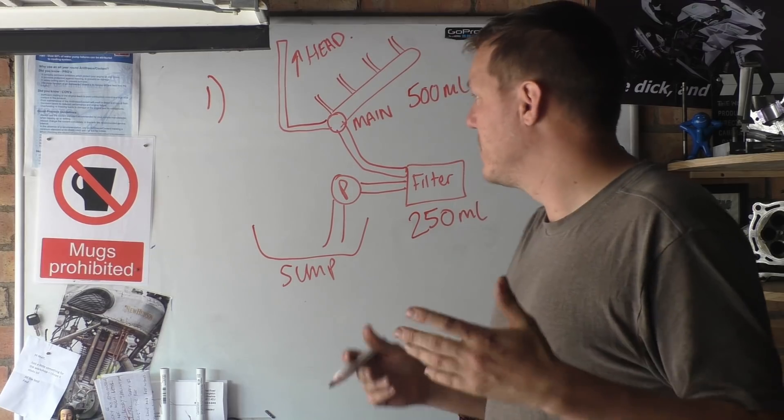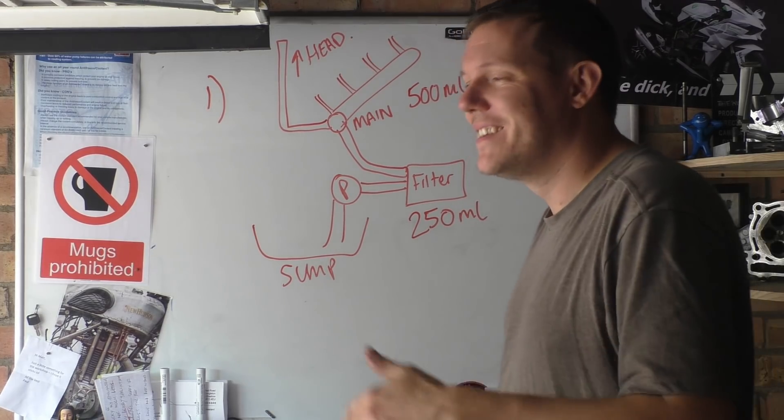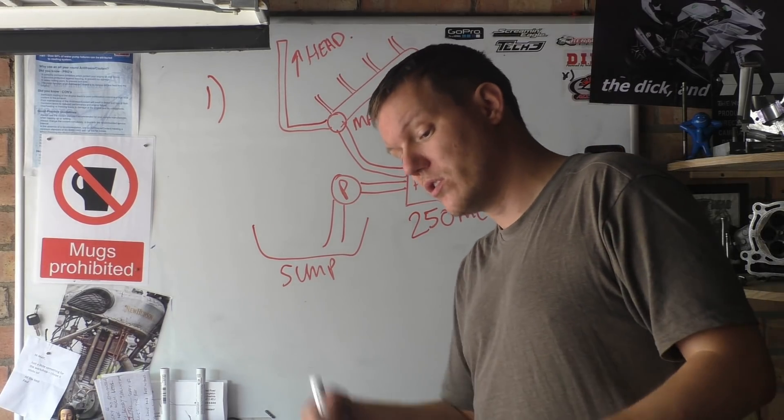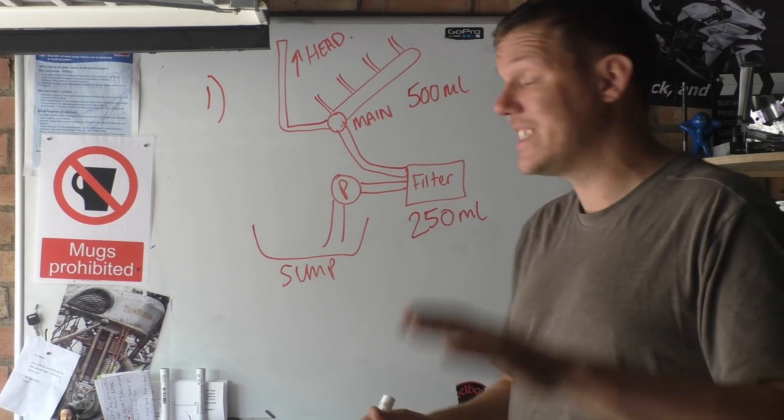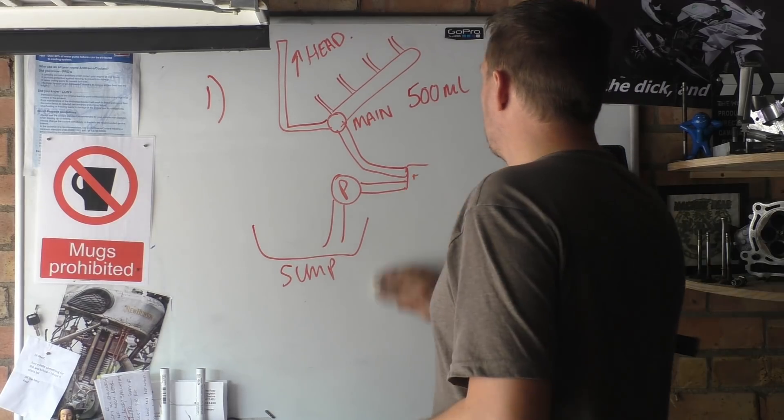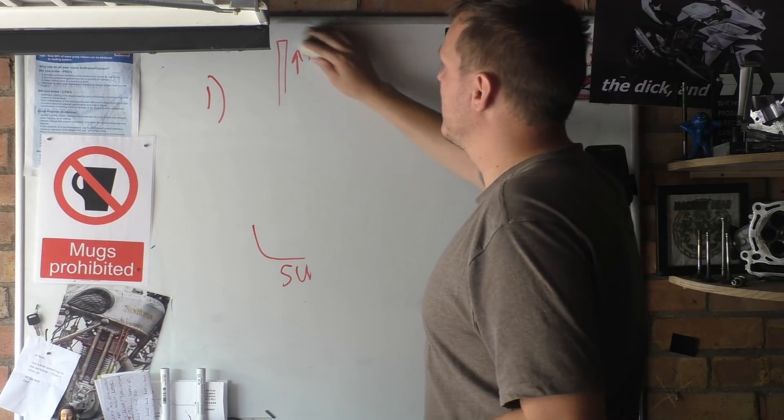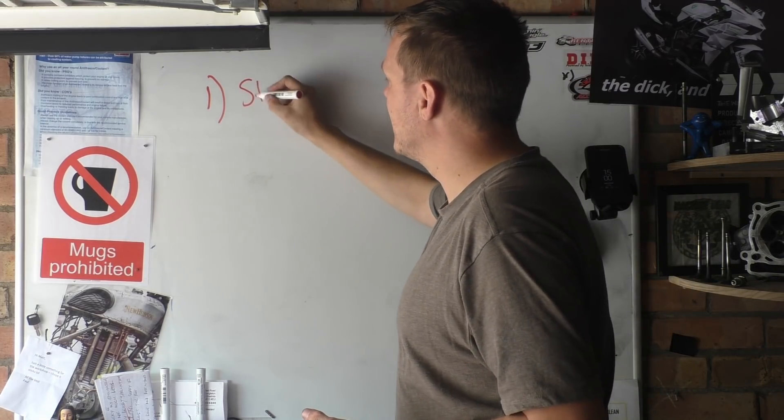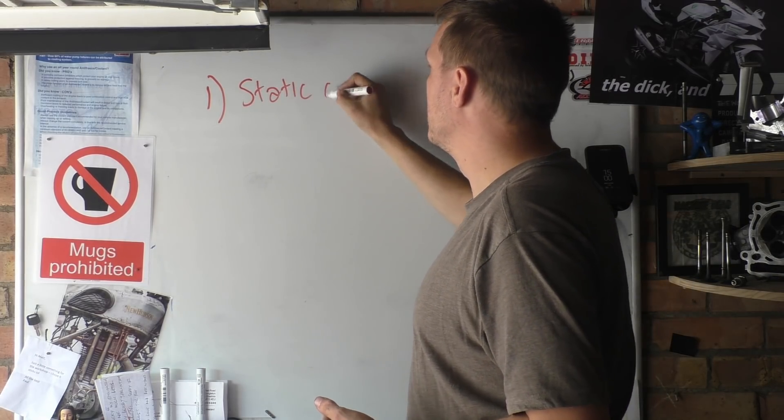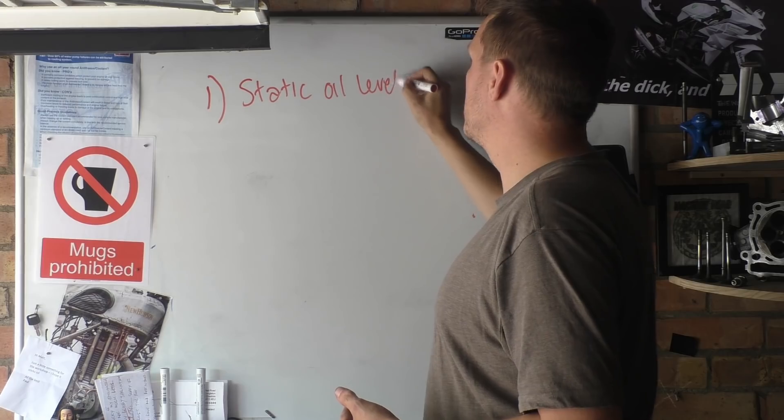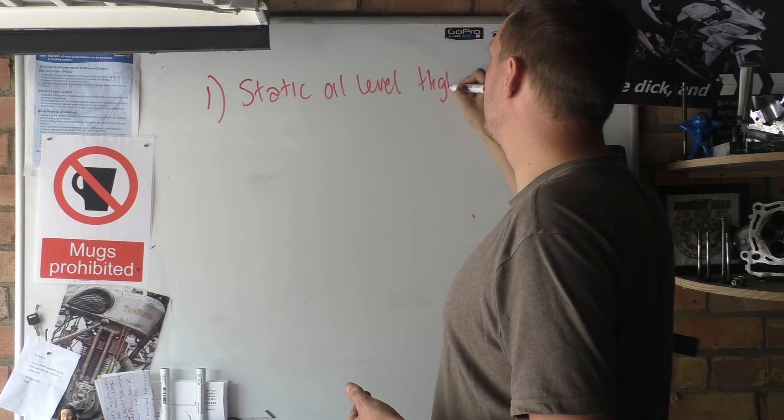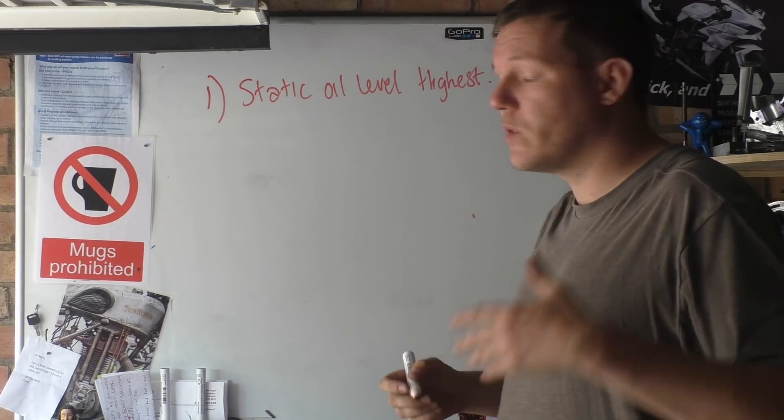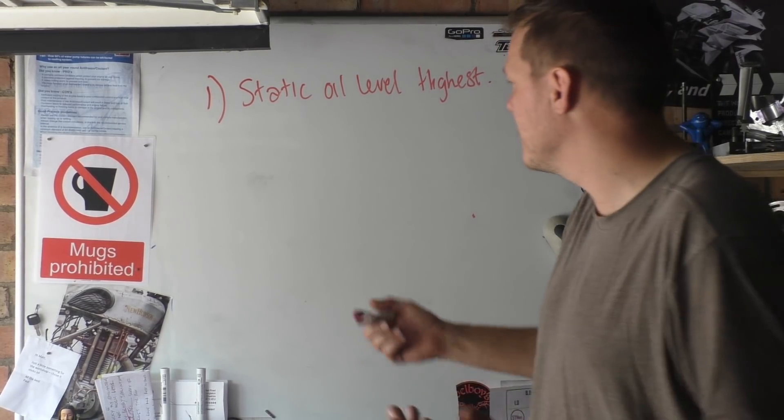Point number one: when you start your engine, your oil level instantly drops. You'll just see it drop. If you look at the window, start the bike up, you'll see that oil level disappear below the window. Your static oil level is always the highest it's going to be when you look through your window or use a dipstick, whatever measurement device you have.